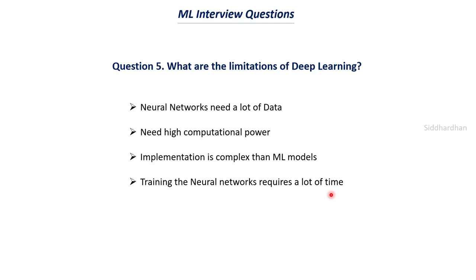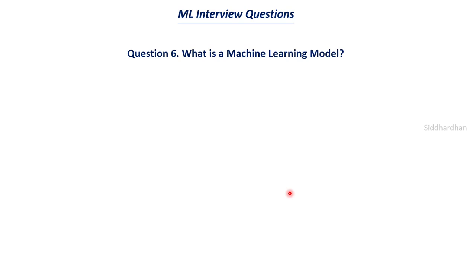The last limitation is that training neural networks requires a lot of time. It requires a lot of data and is very complex, so training neural networks with huge amounts of data can take a long time — even days or weeks. So the four limitations of deep learning are: it needs a lot of data, it needs high computational power due to its complexity, it is harder to implement, and training takes a very long time.